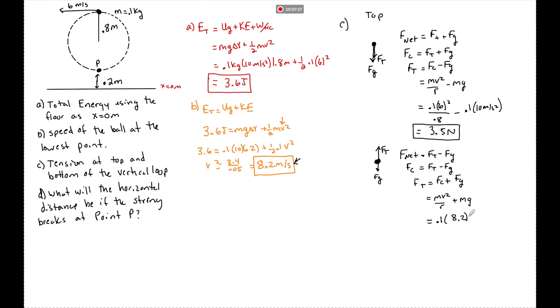so we have 8.2 squared divided by 0.8 plus 0.1 times 10. And we see that the tension at the bottom is 9.5 Newtons, much more at the bottom. Tension has to work a lot harder at the bottom of a loop. And for part D, so when this object now is cut right here, all of its speed is tangent to the circle.